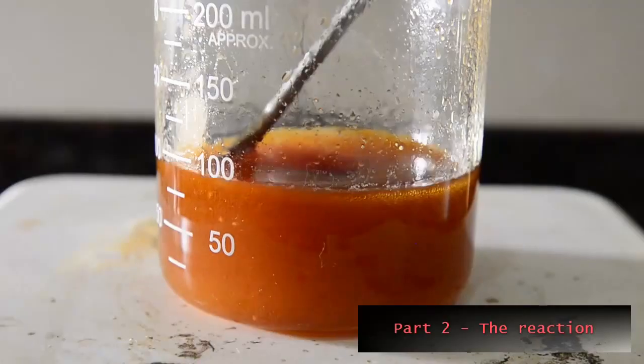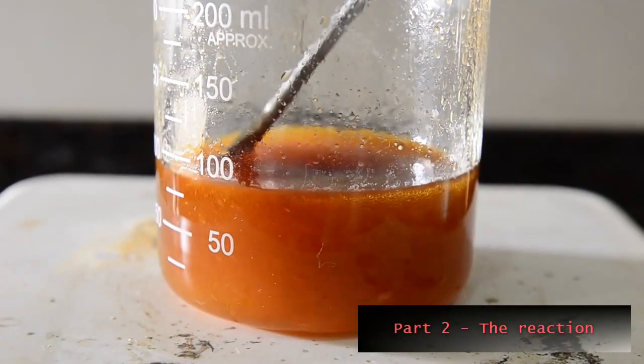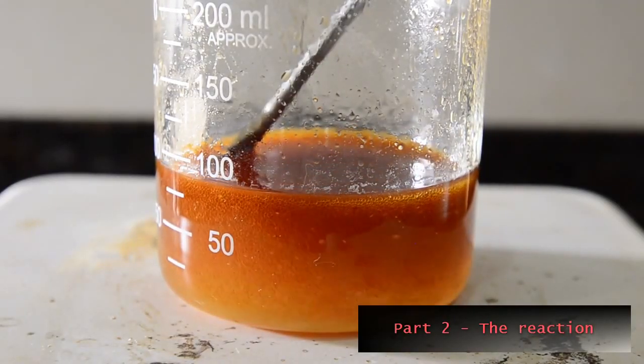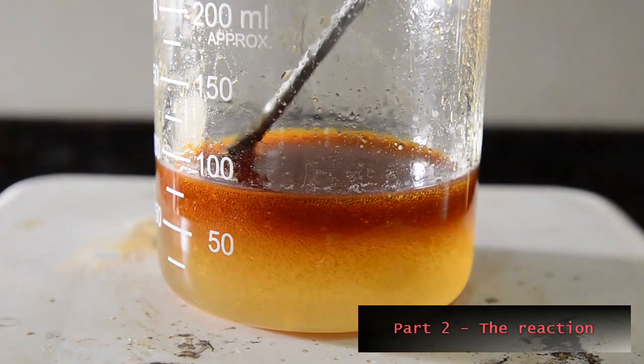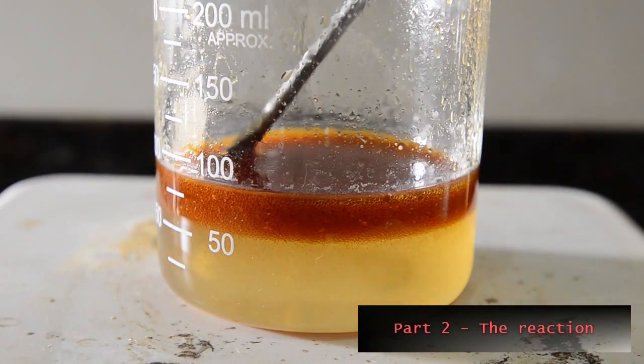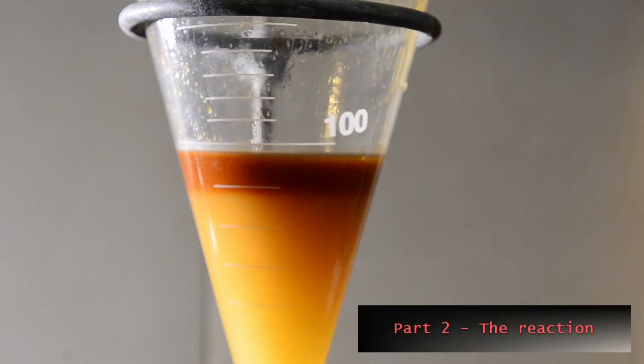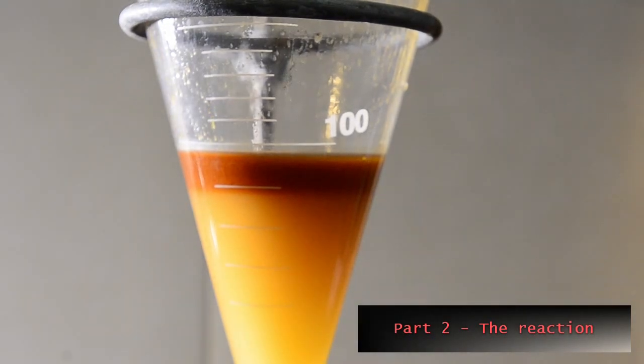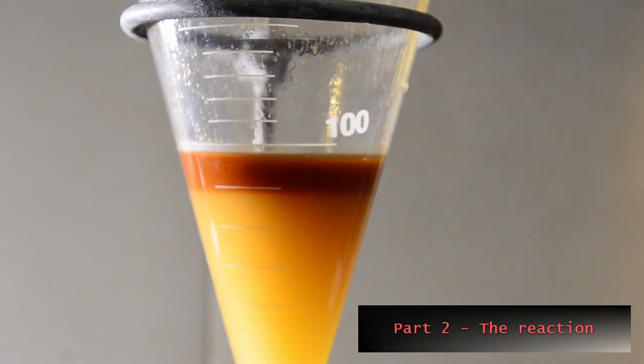Continue stirring for 20 minutes. At the end of this period you should see the mixture separate into two layers. Place the mixture into a separating funnel and separate it. Reserve the oily top brown layer. This contains our crude mandelonitrile intermediate.